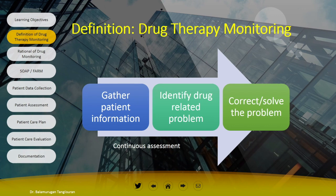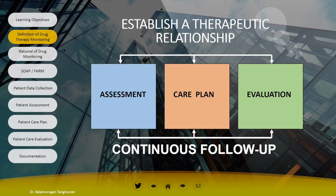Assessing a patient's existing therapy can be a daunting process. It is easy to overlook one or more drug therapy problems. However, the use of a systematic and consistent format in the assessment process is vital. In order to produce drug therapy monitoring, we need to establish a therapeutic relationship with the patient, do an assessment, provide a care plan, and have an evaluation. This process must be continuous with follow-up.